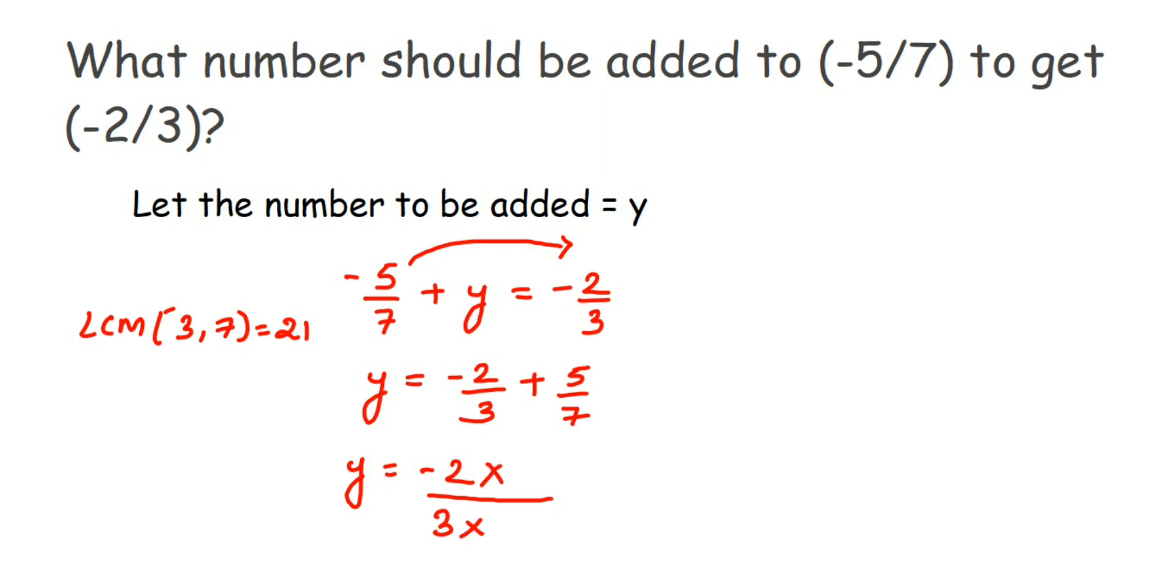We're finding equivalent rational numbers. For 5/7, what should we multiply 7 by to get 21? It's 3, so multiply 3 in both the numerator and denominator.